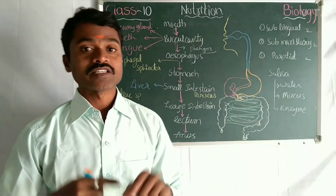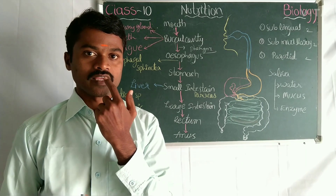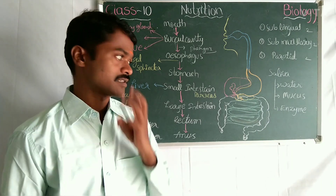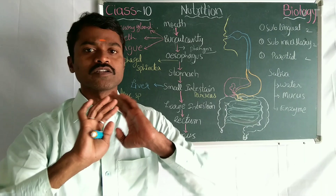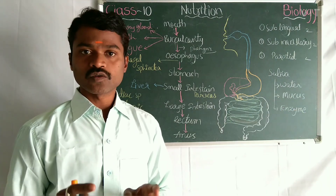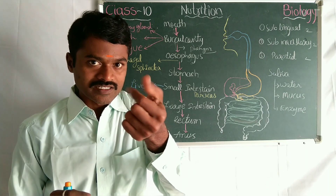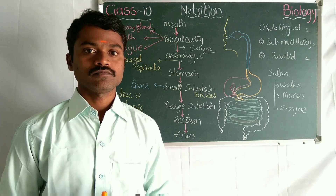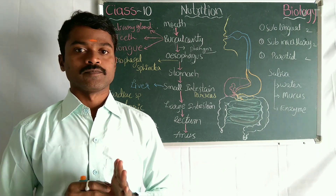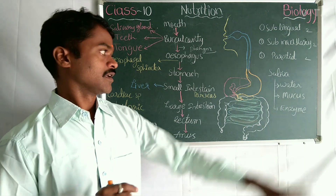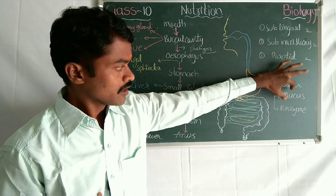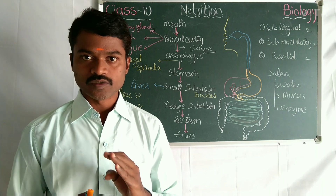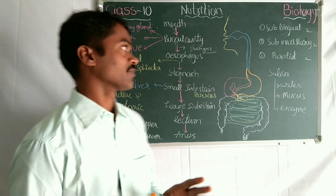The salivary glands secrete saliva. Saliva is a sticky, slippery substance in our mouth. Saliva contains three things: water (nearly 70 to 85%), mucus, and an enzyme called ptyalin — also known as salivary amylase. Water helps in digestion, mucus helps to swallow the food, and the enzyme helps to digest carbohydrates.